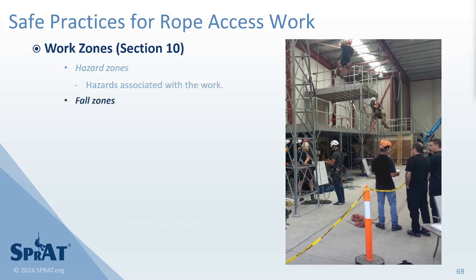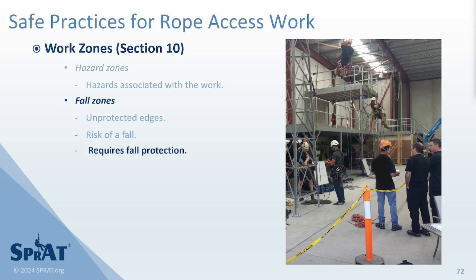Fall zones must also be identified and established, extending a minimum distance of 2 meters (6.6 feet) from any unprotected edge. Fall zones should be marked or blockaded to warn work team members and others, including the public, of the risk of a fall. Appropriate fall protection must be used within a fall zone. To facilitate access, anchorage systems should be established outside the fall zone.